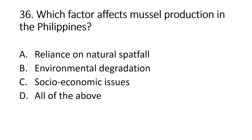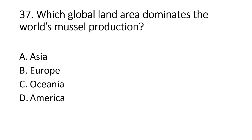Number 36. Which factor affects mussel production in the Philippines? A. Reliance on natural spat fall. B. Environmental degradation. C. Socioeconomic issues. D. All of the above. The answer is letter D, all of the above. Number 37. Which global land area dominates the world's mussel production? A. Asia. B. Europe. C. Oceania. D. America. The answer is letter A, Asia.